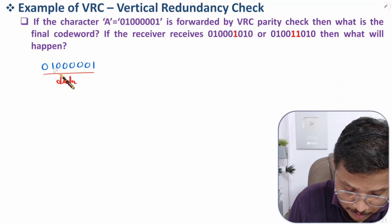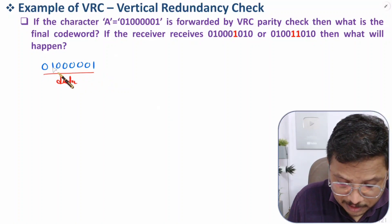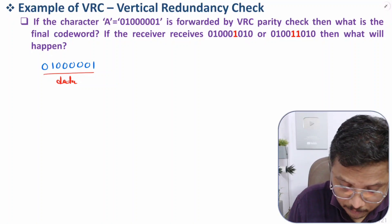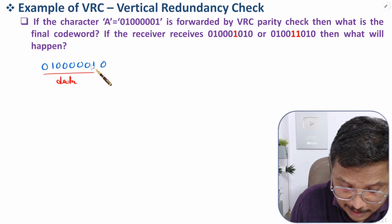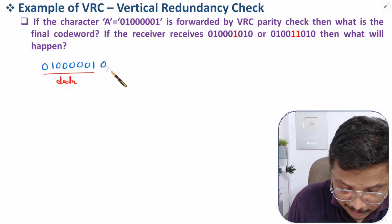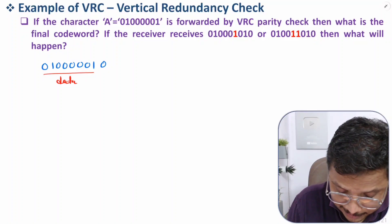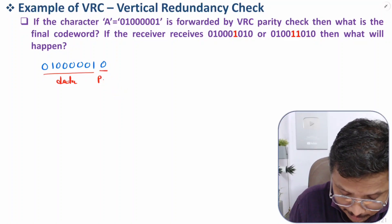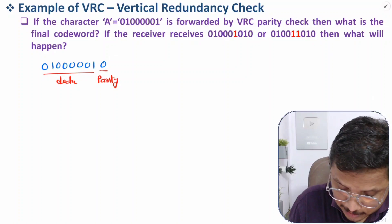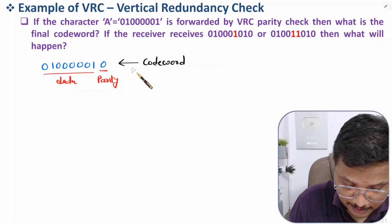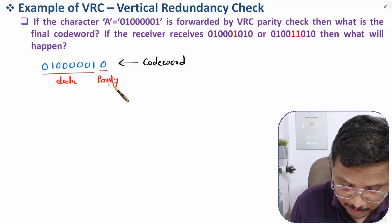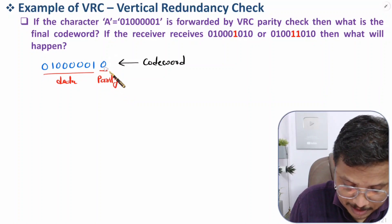In this data, we count how many ones are there — here, one and two, so two ones are there, meaning we have an even number of ones. If you have an even number of ones, you append the additional parity bit as 0. If odd number of ones are there, you append the additional bit as 1. This parity bit is appended, giving us the final codeword by VRC.